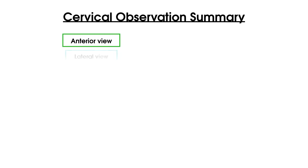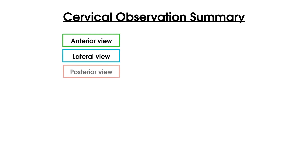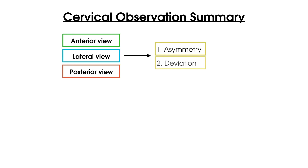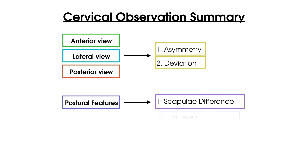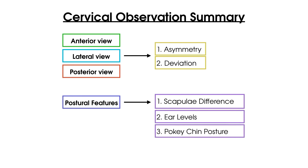To summarize this video on cervical spine observation: observe the patient in an anterior, lateral, and posterior view, considering two main factors — number one, an asymmetry between the right and left sides, and number two, a deviation of the spine from a neutral position. Look for key common postural features highlighted in this video, including a difference in scapular position between the right and left sides, a difference in ear levels, the presence of pokey chin posture, or the presence of a thoracic scoliosis.